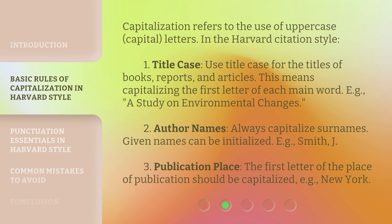The second rule covers Author Names. Always capitalize surnames. Given names can be initialized. For example: Smith, J. The third rule is Publication Place. The first letter of the place of publication should be capitalized. For example: New York.